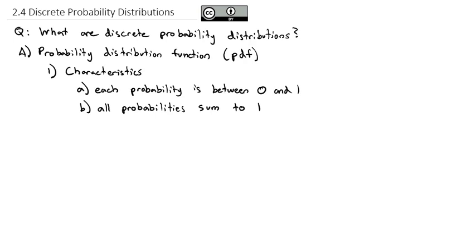Now often, we'll organize these probability distribution functions by what we call random variables. And a random variable just describes the outcomes of an experiment.